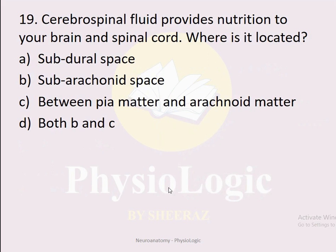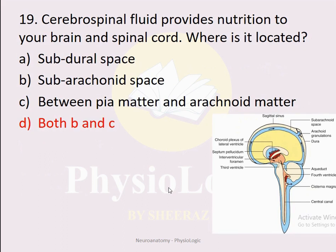MCQ number nineteen: Cerebrospinal fluid (CSF) provides nutrition to your brain and spinal cord. Where is it located? Option A: subdural space. Option B: subarachnoid space. Option C: between pia mater and arachnoid mater. Option D: both B and C. The correct option is D, both B and C. CSF is present in the subarachnoid space — the space below arachnoid mater — which is between pia mater and arachnoid mater, so both options describe the same space.